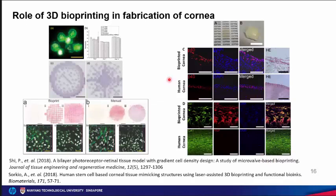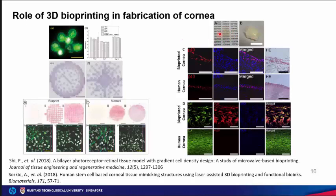For corneal bioprinting, precise patterning of different corneal and retinal cells achieves more homogeneous cell distribution and facilitates important cell-cell interactions. An important consideration for corneal tissue engineering is the development of transparent material — one study developed a material with moderate transparency and suitable mechanical properties for corneal tissue engineering applications.